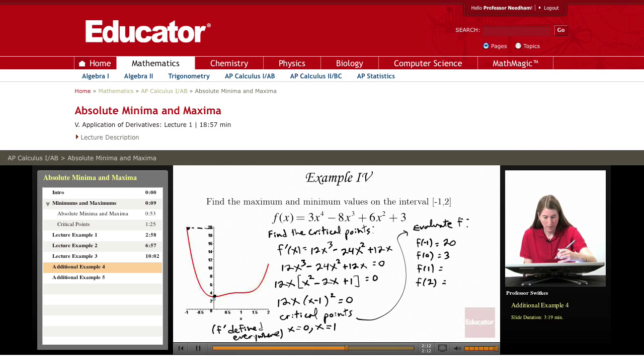f of 1 is 3 minus 8 is negative 5, plus 9 is 4, so f of 1 is 4. That's consistent of course with the plot as well. f of 2 I probably can't do in my head, so we have 2 to the 4th times 3, minus 8 times 2 cubed, plus 6 times 2 squared, plus 3.